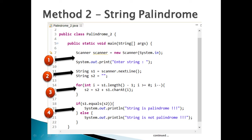The String class has a method charAt() which takes an integer value and returns the character at that index. With each iteration, starting from the last character of s1 to the first, we concatenate it with s2. After the for loop ends, we get string s2 containing s1's characters in reverse direction.